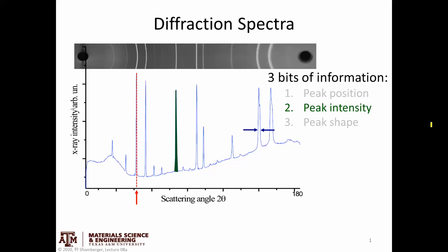We're going to pick up where we left off in the last video, and keep talking about information we're able to get from an X-ray diffraction spectra. Before, we were focusing primarily on peak positions — at what particular scattering angle. But today, what we're going to focus on is peak intensity.